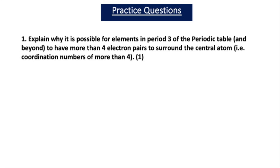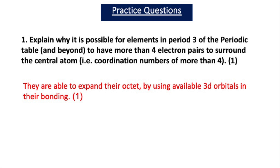Now let's test your understanding with some practice questions. Question one: explain why it is possible for elements in period 3 of the periodic table and beyond to have more than four electron pairs surrounding the central atom, i.e. coordination numbers of more than four. This is a one-mark question. The answer is that they are able to expand their octet by using available 3d orbitals in their bonding.